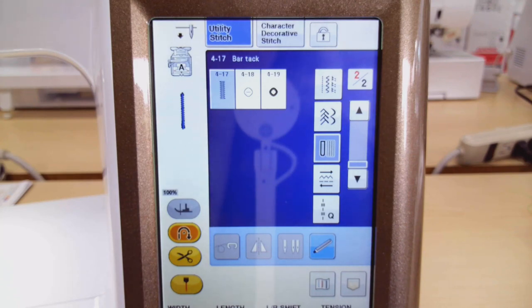This is a stitch that you will see on flies to reinforce certain parts of the fly on your pants, also to attach belt loops, and sometimes to reinforce the upper corners of your pockets just to make them a little bit more durable.